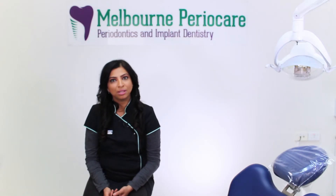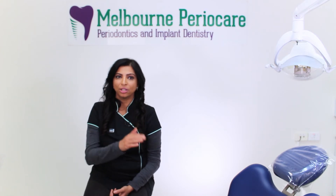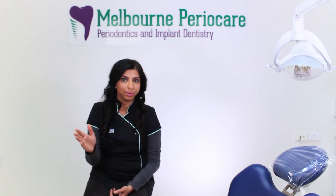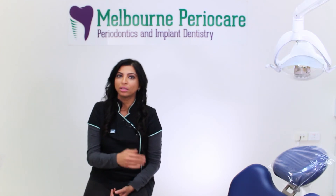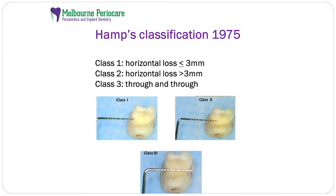Then came Hamp's classification in 1975. He classified furcation involvement according to the horizontal bone loss. Class one was where bone loss was less than or equal to three millimeters. Class two was where bone loss was more than three millimeters but wasn't through-and-through. Class three was a through-and-through bone loss.